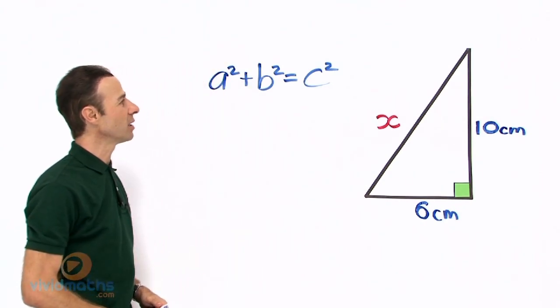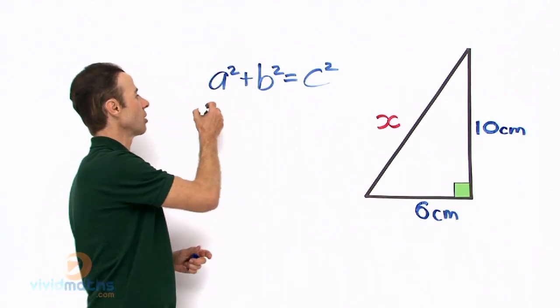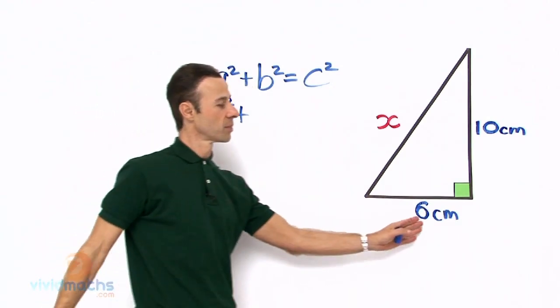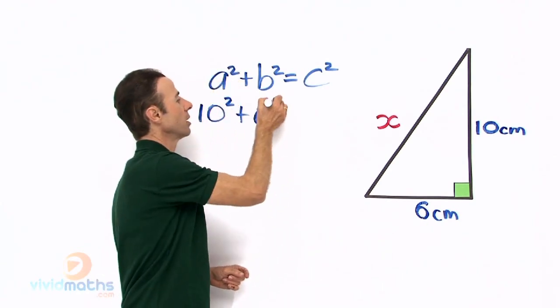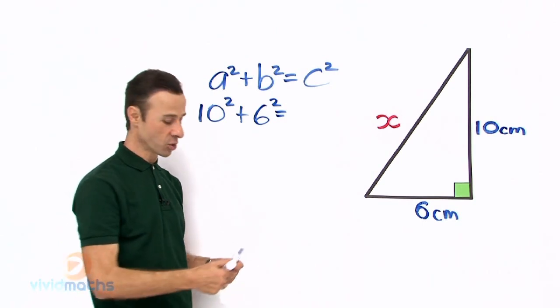So let us put in the missing numbers. We have 6 cm and 10 cm right over there. So let us write down 10 squared plus 6 squared equals, and in this case the hypotenuse is actually x squared.